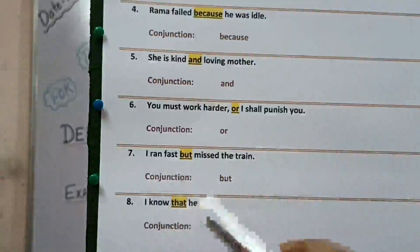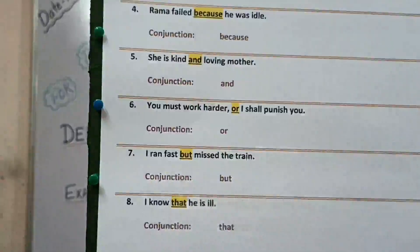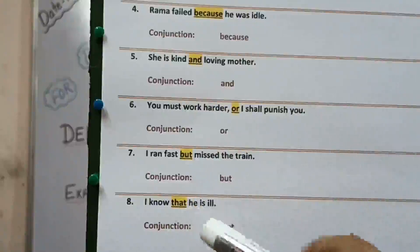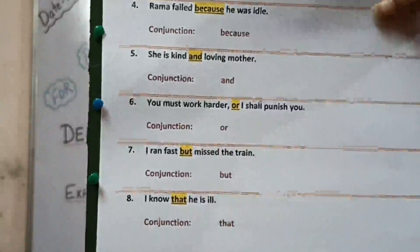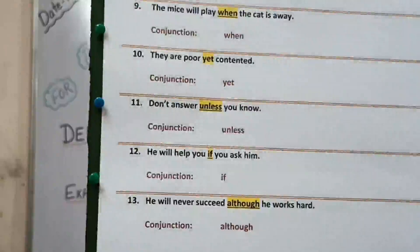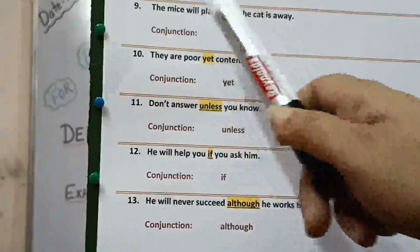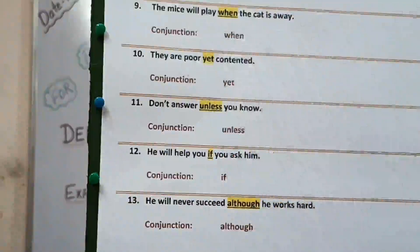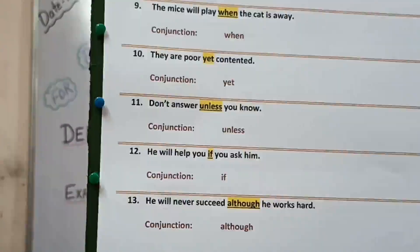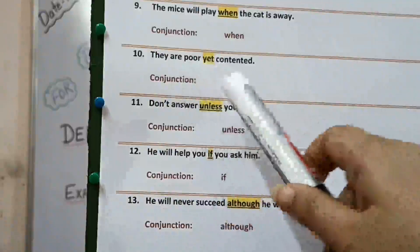Eighth: I know that he is ill. When the fact is being given — I know that he is ill — here 'that' is the conjunction. Ninth: the mice will play when the cat is away. Here the timing is given — when the cat is away — so the conjunction is 'when'. Tenth: they are poor yet contented. 'Yet' is used with contrast despite of something, so here the conjunction is 'yet'.